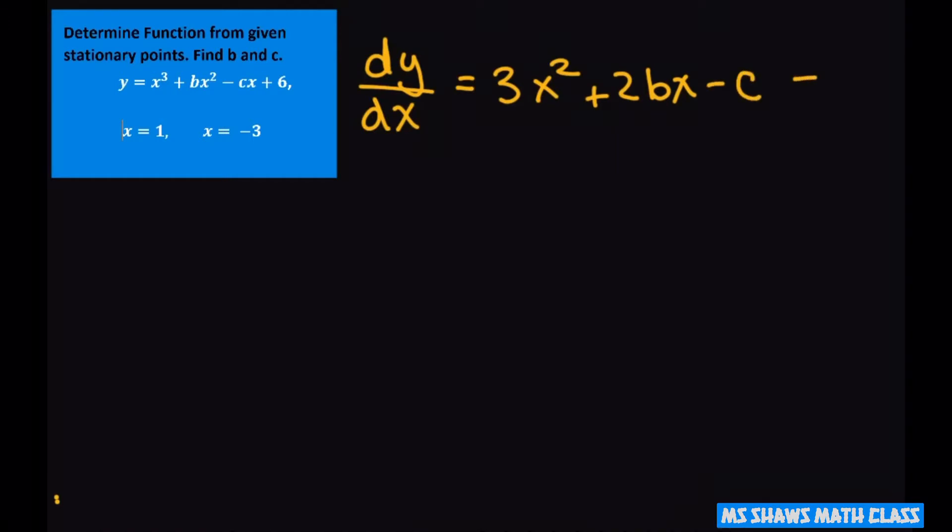And we want to set this to 0. Now usually what you do is you find the stationary points based off that. And that means when x is 1, when you plug in 1 in here, in your x's you'll get 0. And also when you substitute x with negative 3 you will get 0.